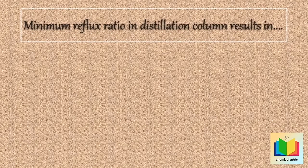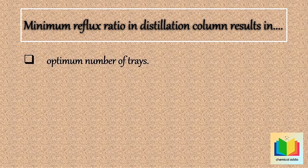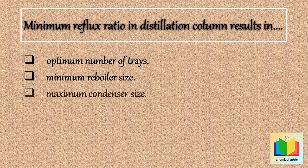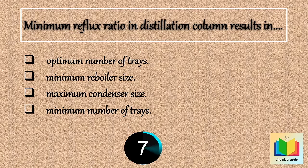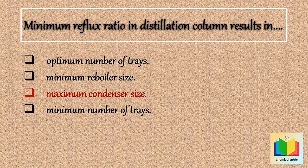Now next question: Minimum reflux ratio in a distillation column results in maximum condenser size. Your time starts now. 10, 9, 8, 7, 6, 5, 4, 3, 2, 1. Stop. So the answer is: Maximum condenser size.